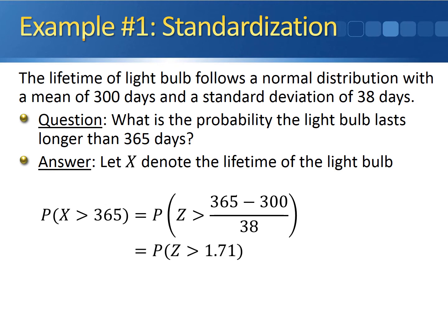So asking what is the probability that x is greater than 365 is equivalent to asking what is the probability that z is greater than 1.71. 365 days is 1.71 standard deviations above the mean of 300.